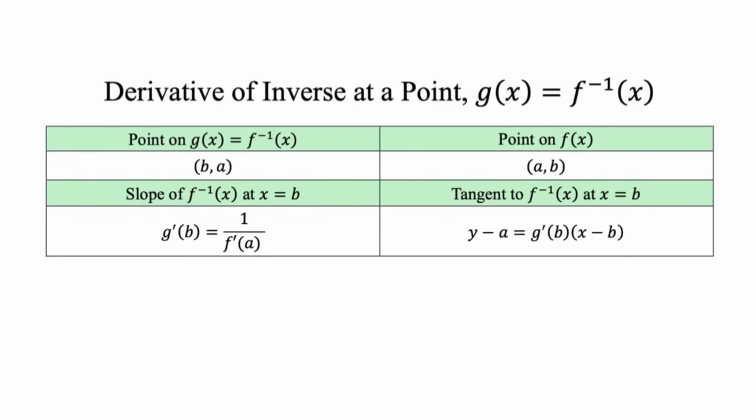First up: derivative of inverse at a point. So if g of x equals f inverse of x, I have this summary for you — you could screenshot this or pause it. Basically, g prime of b is equal to one over f prime of a. They will give you b; you often have to solve for a. On more modern versions of the exam, they give you a table of values and you seek out b in the y-value column, see what a-value is associated with it, and then find the derivative.